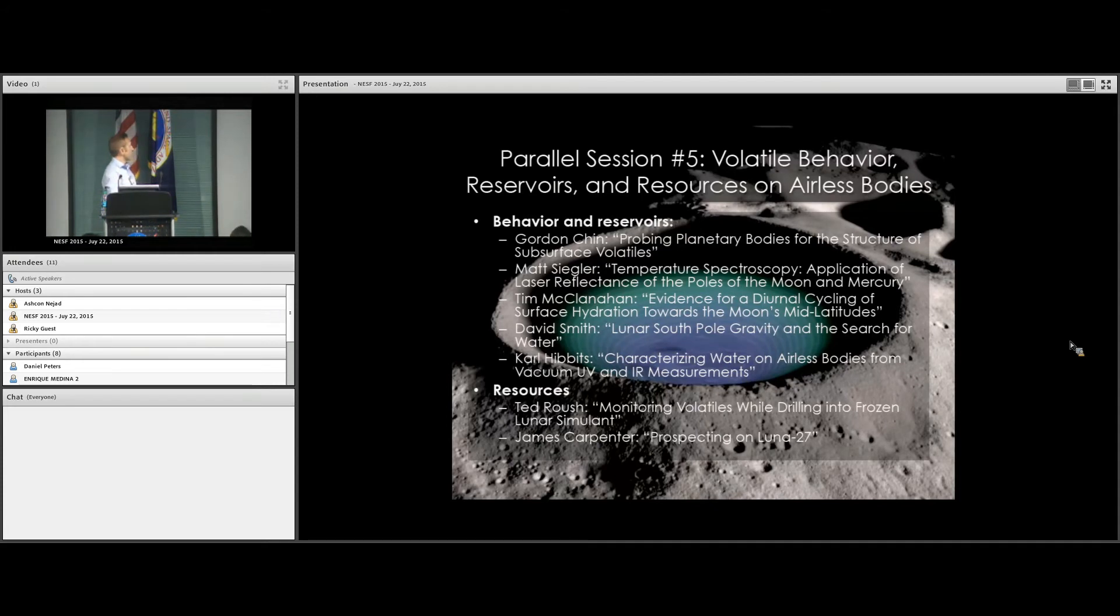I've divided the talks into two categories. Behavior and reservoirs concerns the distribution of volatiles, their composition, what we know about them scientifically. Then there's the question of resource potential. If you wanted to go access these volatile reservoirs, where would you go, how much would you find when you got there, and is it enough to be useful either as a scientific resource or a technical resource?